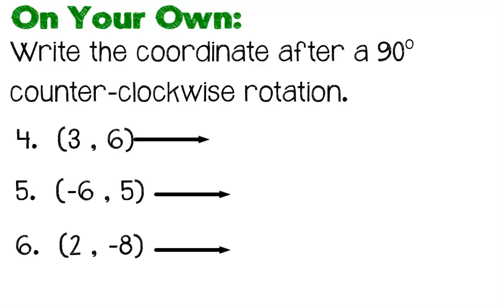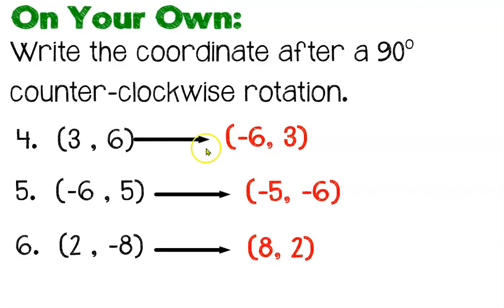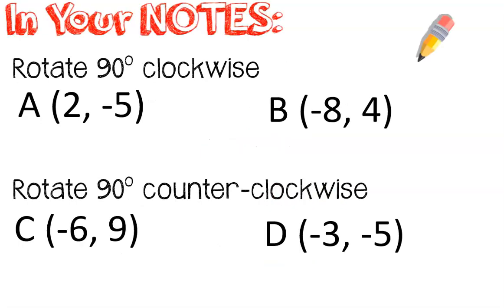I think you've got the hang of it. Go ahead and rotate these three points about the origin 90 degrees counterclockwise. Pause the video now. We swapped and changed the first value each time — that's it, you've got it! I'd like for you to try these last four on your own. Pause the video now and let's see if we can show that we've mastered this concept.